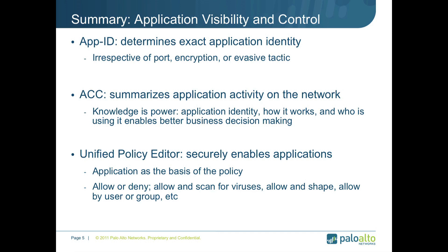To summarize what we talked about today relative to application visibility and control: App ID, the heart of the Palo Alto Networks firewall, classifies exactly what the application is irrespective of port, encryption in use, or evasive tactic. That information is then translated into a visual summary in ACC, and that knowledge provides administrators with tremendous power. The application identity, how it works, and who's using it enables better decision making on how to treat that application — whether it's allow, deny, securely enable, or otherwise. That is accomplished in the unified policy editor, where you can securely enable applications using the application and even the user as the basis of the policy — allowing the application and scanning for viruses, shaping with QoS, or allowing by user or group. The options are almost limitless in terms of securely enabling applications.